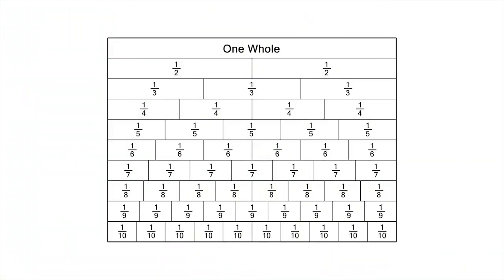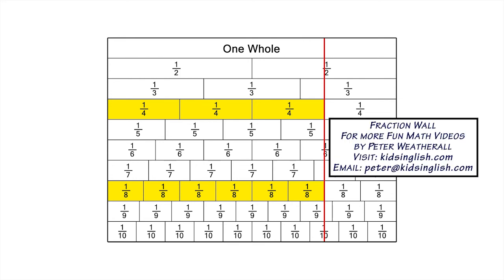Let's summarise what we've found. Three quarters and six eighths are equivalent fractions. One way to check for equivalent fractions is to see which fractions line up with three quarters when you draw a vertical line from the end of three quarters down the fraction wall. The end of six eighths lines up nicely with three quarters.